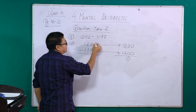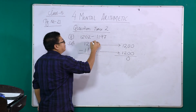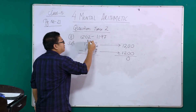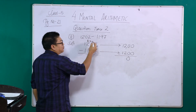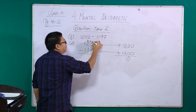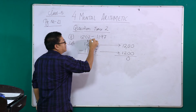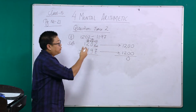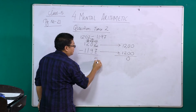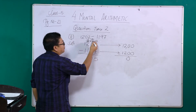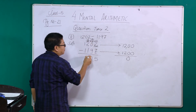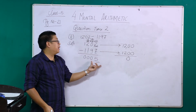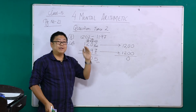For the actual subtraction of 1,202 minus 1,197: the 1's place has 2 minus 7, so we need to borrow. Since the 10's place is 0, we shift to the 100's place — that 2 becomes 1, and through regrouping we get 12 minus 7 is 5, then 9 minus 9 is 0, 1 minus 1 is 0, 1 minus 1 is 0. So the actual answer is 5. Your estimation of 0 is almost near 5. This is all about estimation to the nearest 10.